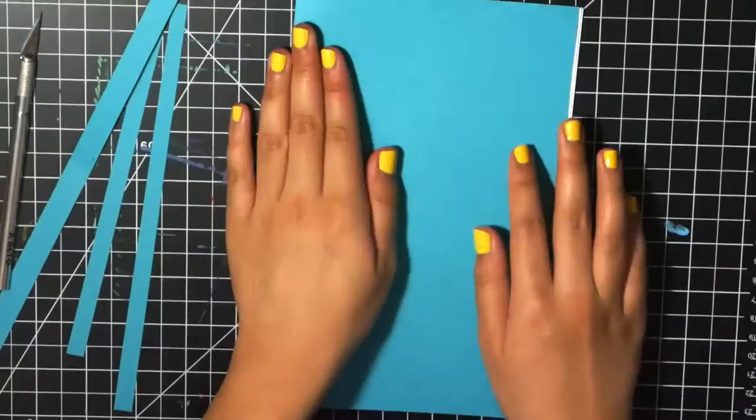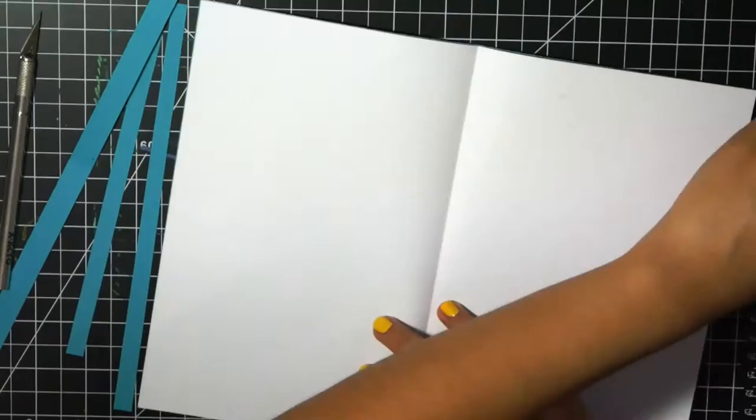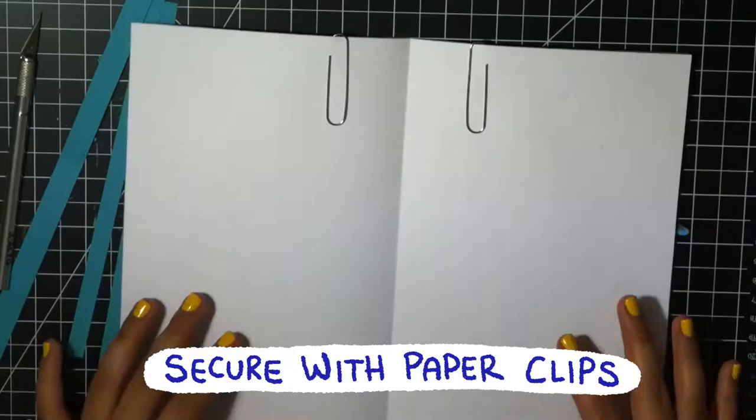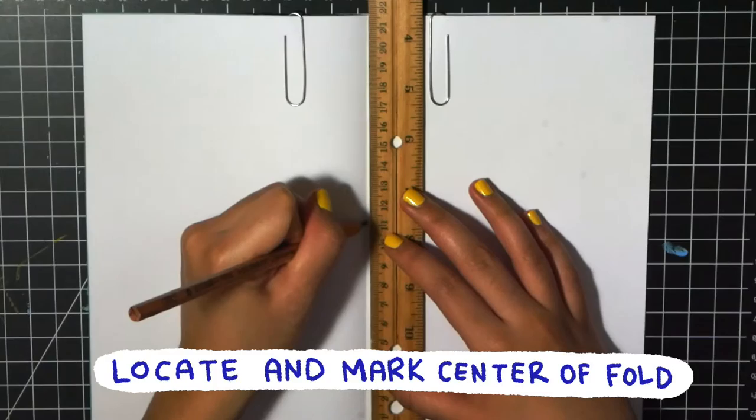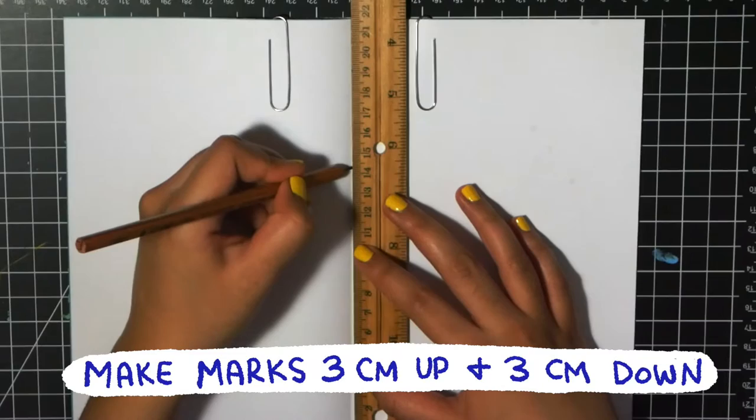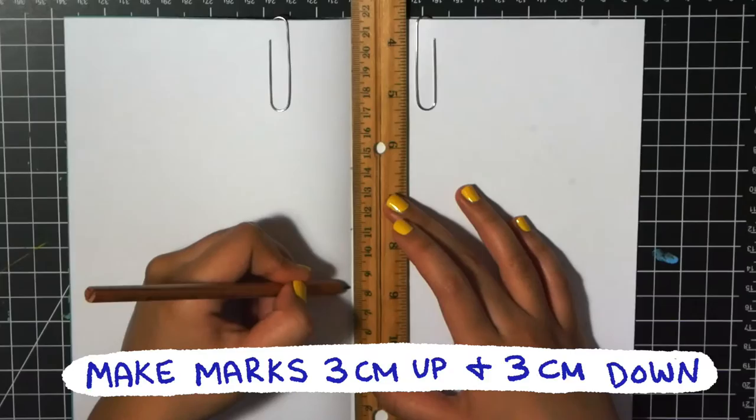Now it is time for stitching. For this part you're going to want to secure the pages with paper clips so that the pages don't move. Okay here I'm marking where I want to poke the needle through. You're going to want to locate the mark in the center of the fold and then you are going to measure three centimeters up and then three centimeters down for the two other points.